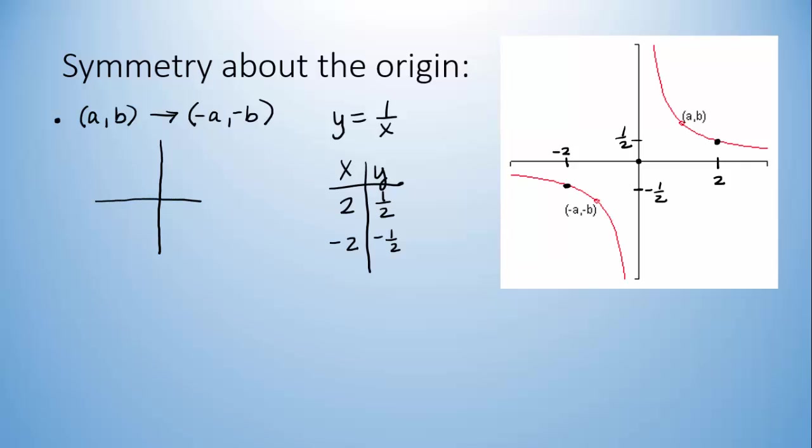Let's say we don't know what the equation is, and I just give you a point that's on the graph. Like, let's say I give you (-3,4), and I say that's on the graph, and it has symmetry about the origin.